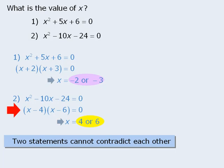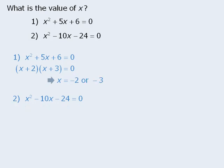Can you spot the mistake? Well, the problem is right here. We incorrectly factored the left-hand side. So let's try that again. When we factor the left-hand side correctly, we can see that if x minus 12 times x plus 2 is equal to 0, then x must equal 12 or negative 2.